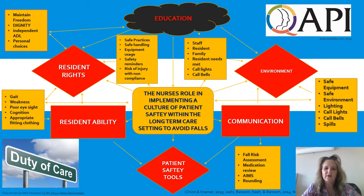An example of this would be putting your patient up against a table at lunchtime. If you lock the wheelchairs, they're more likely to attempt to get up and move away from the table, which could cause them to fall. If you don't lock them — and that's their resident right, not to keep them restricted — they are going to be able to push away from the table and go where they need to go, and they wouldn't have as much of a chance of falling.